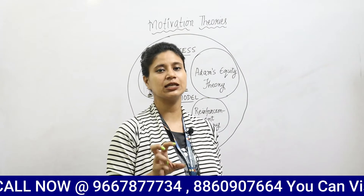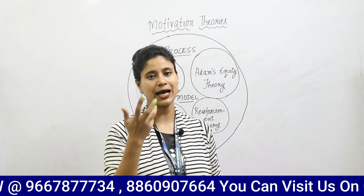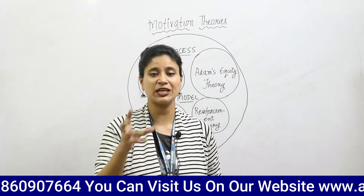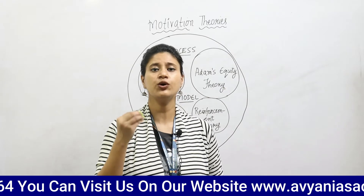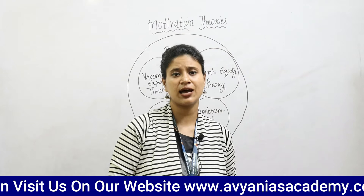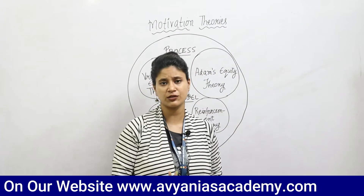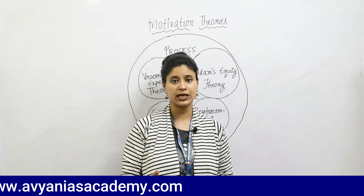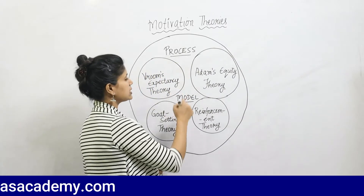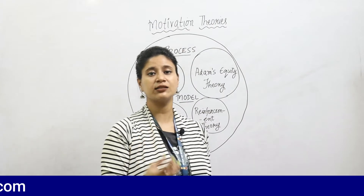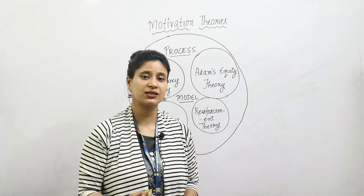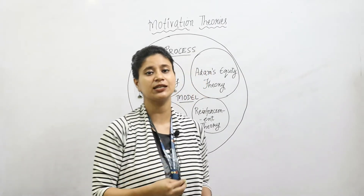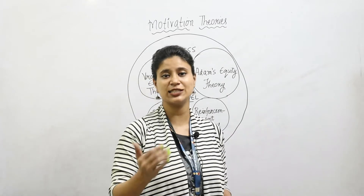In the first videos, we saw that theories are divided into two categories: content and process. In the content theories, we divided motivation based on employees' needs — intrinsic or extrinsic. We studied Maslow's Need Hierarchy theory, the ERG theory, Herzberg's two-factor theory, and McClelland's theory of need. When we talk about the process model, we talk about factors other than need which motivate an employee to attain organizational objectives and increase productivity.